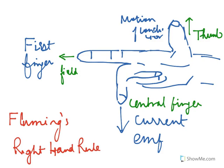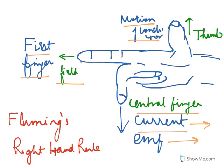Before we start with the solution, a quick recap of Fleming's right-hand rule, because we are going to use it. The thumb of the right hand points towards the motion of the conductor. The first finger points towards the magnetic field, and the central finger gives the direction of induced current or induced EMF. This is Fleming's right-hand rule.